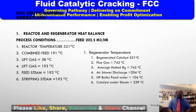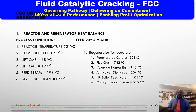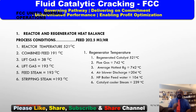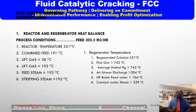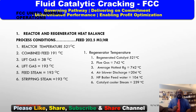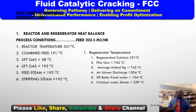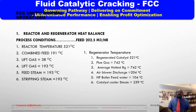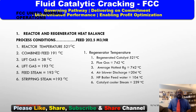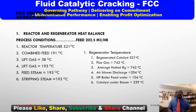Reactor and regenerator heat balance — process conditions. This heat balance is for the 202.5 cubic meters per hour feed case with the FCC unit in total combustion mode. The process conditions are: reactor 521°C, combined feed 191°C, lift gas 30°C, lift steam 193°C, feed steam 193°C, stripping steam 193°C, regenerator catalyst 744°C, flue gases 742°C, average hottest regenerator 742°C, air blower discharge 204°C, HP blower feed water 104°C, catalyst cooler steam 239°C.